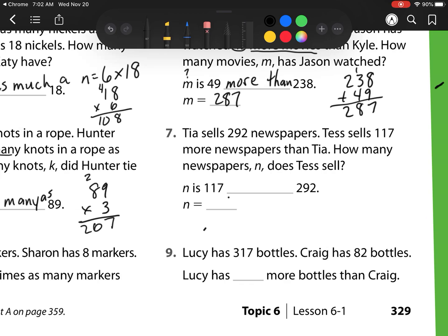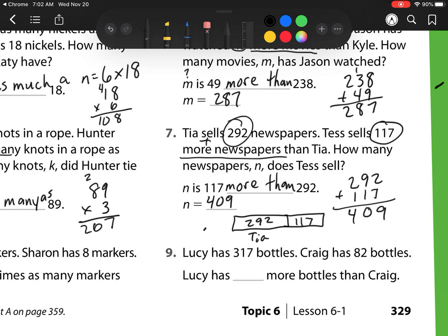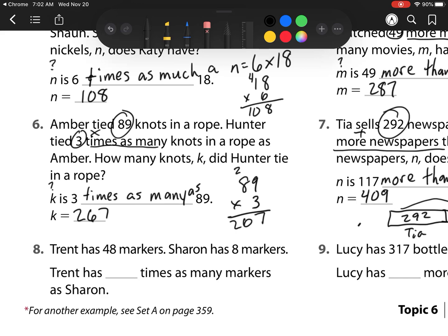Heading on over to number 7. Tia sells 292 newspapers. Tess sells 117 more newspapers than Tia. How many newspapers N does Tess sell? Well, we know that N is a bigger number because she has sold more, so this is a more than or addition problem. So I'm going to add my 2 up, and I get 409. As a model, this is what it would look like. We have Tia has 292. Tess has sold 117 more. So I'm adding that 117 to the 292 that Tess had. So then I would just figure out what does that equal.